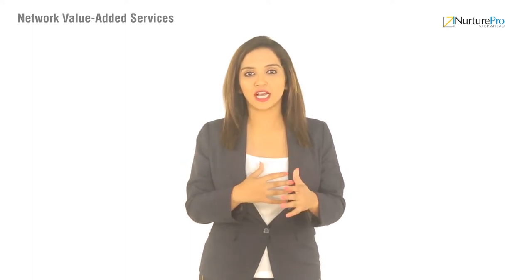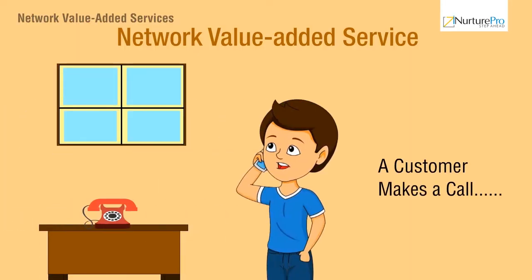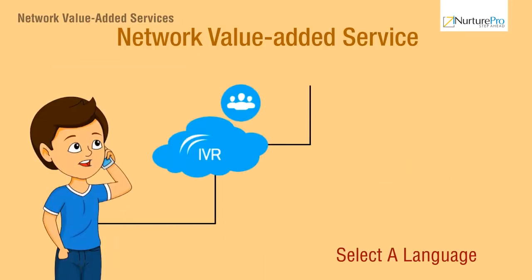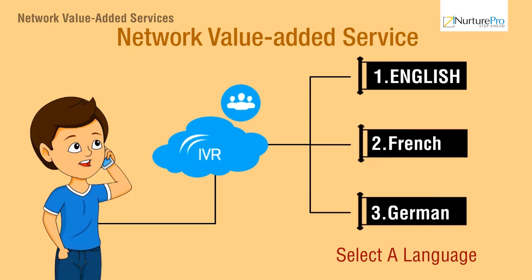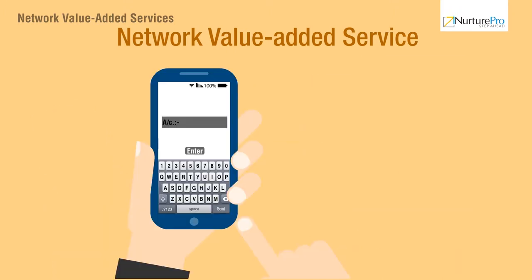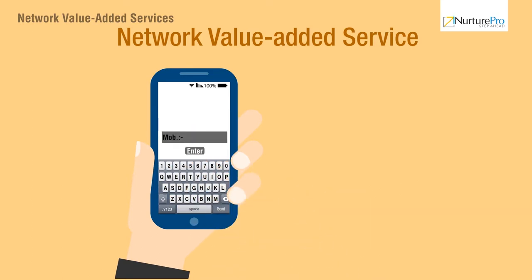Consider that you have called your bank's customer care number to find out your account balance from your mobile phone. When you dial a customer care number, first the system will ask you to choose your preferred language — English or any other regional language — by pressing 1 or 2 respectively. You then press 1 for English. The system will ask you to enter your account and telephone personal identification numbers, after which you will receive a message telling you your account balance.